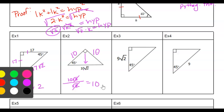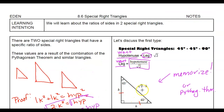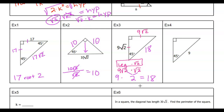Let's look at example three — this is a little harder. I know these are my two legs, so if that's 9 root 2, I know this is 9 root 2. We're typically used to seeing the root on the hypotenuse, but it doesn't matter. Whatever we have for the legs, we take that times root 2 for the hypotenuse. So 9 root 2 times root 2: root 2 times root 2 is 2, times 9 gives me 18. That's our hypotenuse.